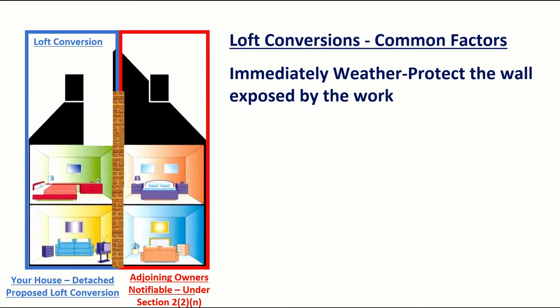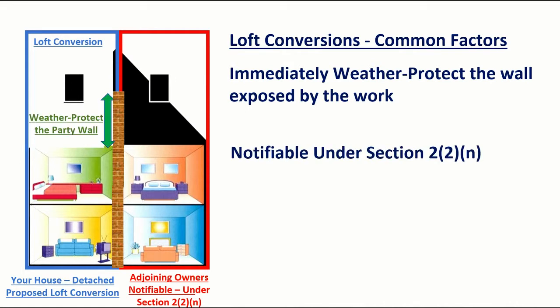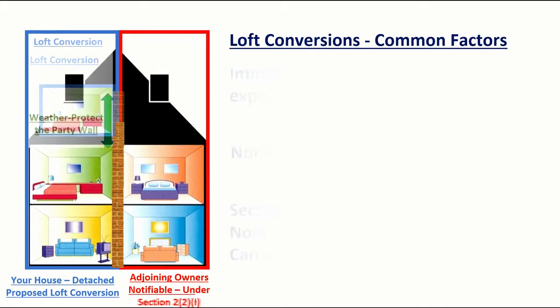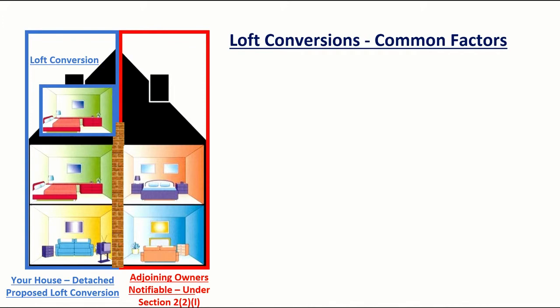The wall joining the two properties in the roof space is a party wall. Once you remove your roof for the purposes of constructing a loft, this party wall becomes exposed and may require weatherproofing for a temporary period. It is a good idea to ensure that the party wall is weatherproofed while works are going on, as this can lead to damp traveling down the wall and affecting your own property as well as your neighbor's.